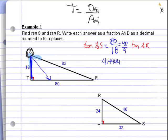Again, you need to make sure that you have both a fraction answer and a decimal answer. Let's practice that again with tangent of R. It's still opposite over adjacent. Now we're dealing with angle R.